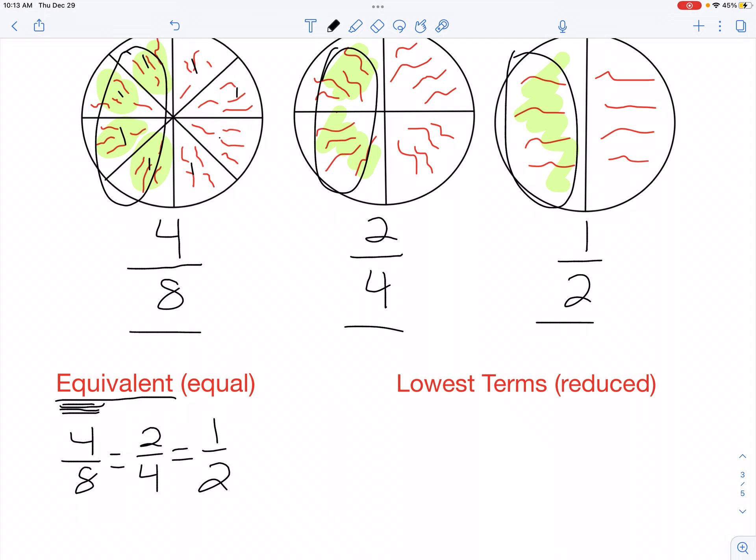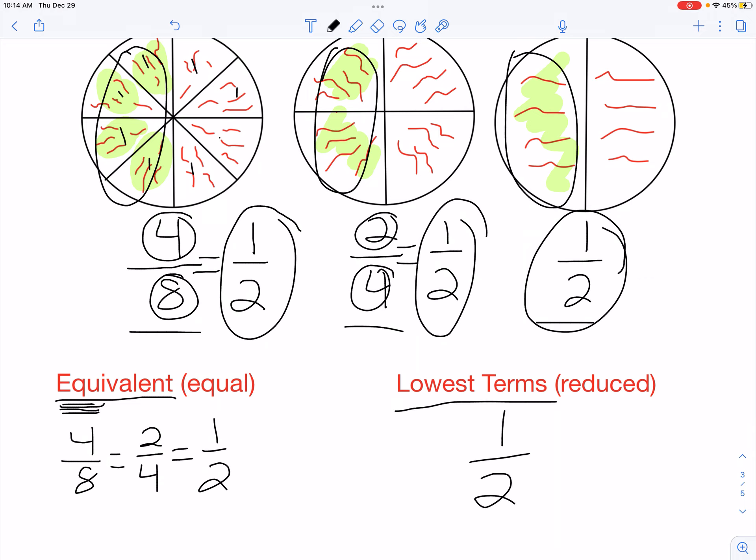Let's show you how. This four reduces. It goes into itself one time and goes into this eight two times. This two reduces. It goes into itself one time and it goes into this four two times. So they are all equal to one half when they are in lowest terms.